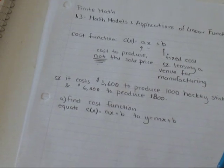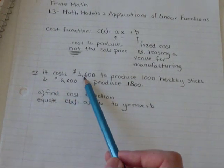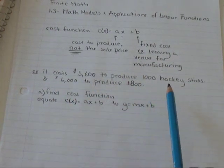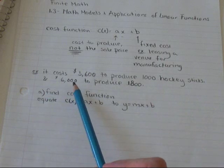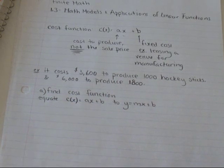So I'm going to do an example. It costs $3,600 to produce 1,000 hockey sticks and $6,000 to produce 1,800 hockey sticks. What is the cost function?